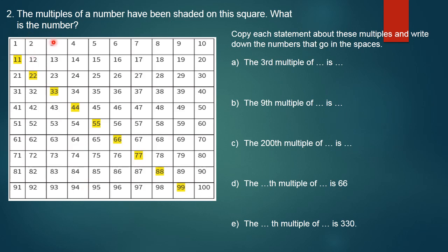The next question says: multiples of a number have been shaded on the square — what is the number? The shaded numbers are 11, 22, 33, 44, 55, 66, 77, 88, and 99. Check the sequence: 11 to 22, add 11 — 22 to 33, add 11. These are all multiples of 11, so the number is 11.